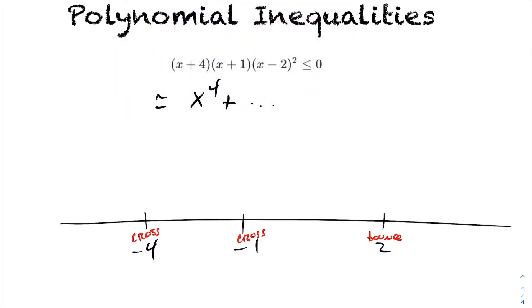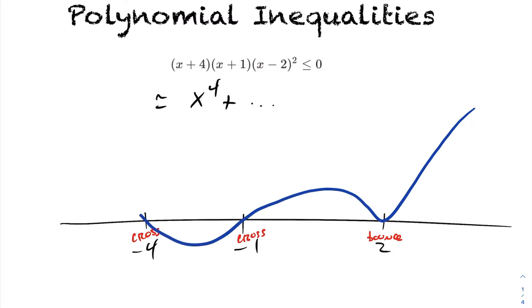Doing a quick sketch of our function: we're starting up at positive infinity, tending towards our root, then bounce, cross, and cross. And we have a rough sketch of our polynomial of degree 4.